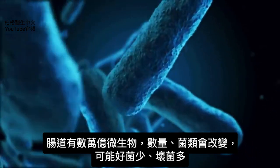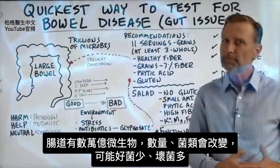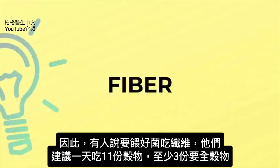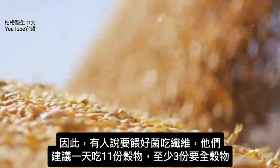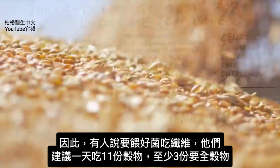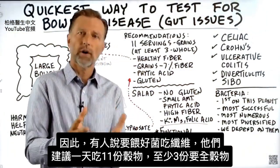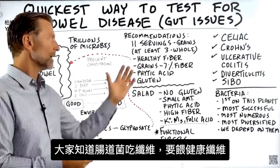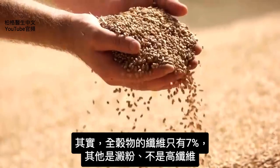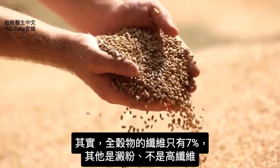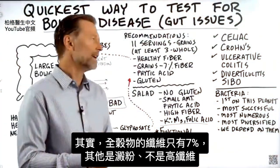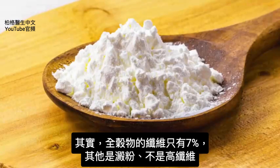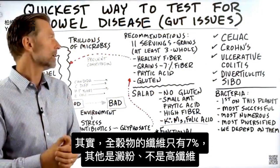You might have too little good bacteria and too much bad bacteria. Of course, people will say you need to feed your bacteria fiber, and this is why they recommend 11 servings of grains, with at least three of those being whole grains — because fiber feeds the microbes. But the confusing part is whole grains don't usually have much fiber, like only 7%. It has a lot of starch, but it's not a very high fiber food.